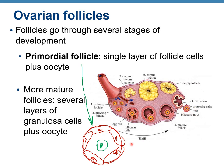At ovulation, the oocyte is ejected into the pelvic cavity. The granulosa cells forming the follicle wall remain in the ovary and transform into a yellow body called the corpus luteum — corpus meaning body, luteum meaning yellow. The corpus luteum then regresses, new follicles start growing and developing, and this process repeats every month.